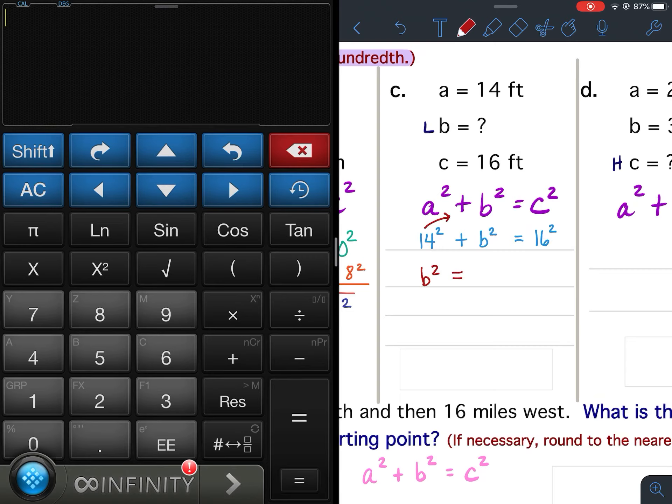Now, to take it to the other side, it needs to be the opposite. Since it was positive 14, I'm going to make it negative 14, so minus 14 squared. So my new equation is now b squared equals 16 squared minus 14 squared. I took the positive 14, moved it to the other side, and made it minus.